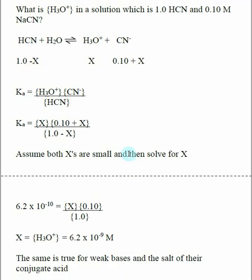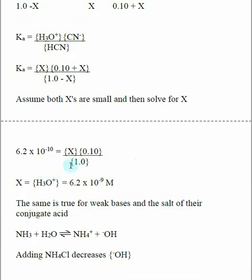In this case, instead of assuming one X is small, we're going to assume that both of these X's are small. When we get rid of these X's, this calculation becomes much simpler, and we solve for X.